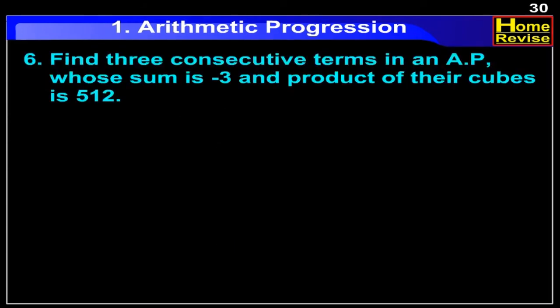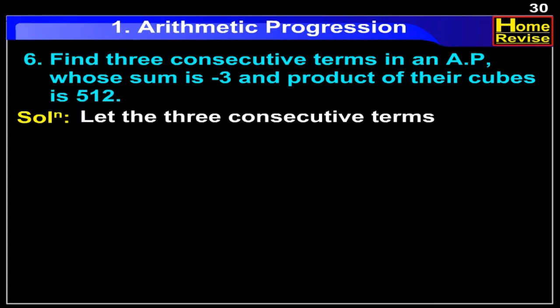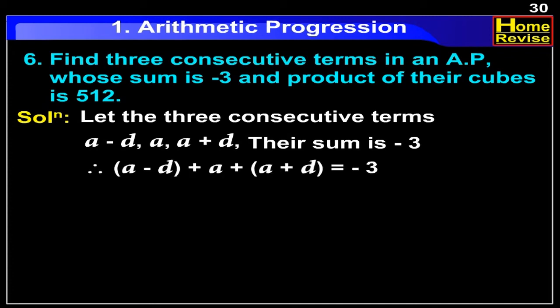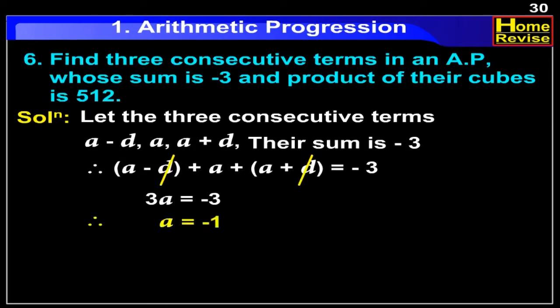Find three consecutive terms in an arithmetic progression whose sum is minus 3 and product of their cubes is 512. Solution: Let the three consecutive terms be A minus D, A, and A plus D. It is given that their sum is minus 3. Therefore, (A minus D) plus A plus (A plus D) is equal to minus 3. Minus D and plus D get cancelled, giving 3A is equal to minus 3. Therefore, A is equal to minus 1.